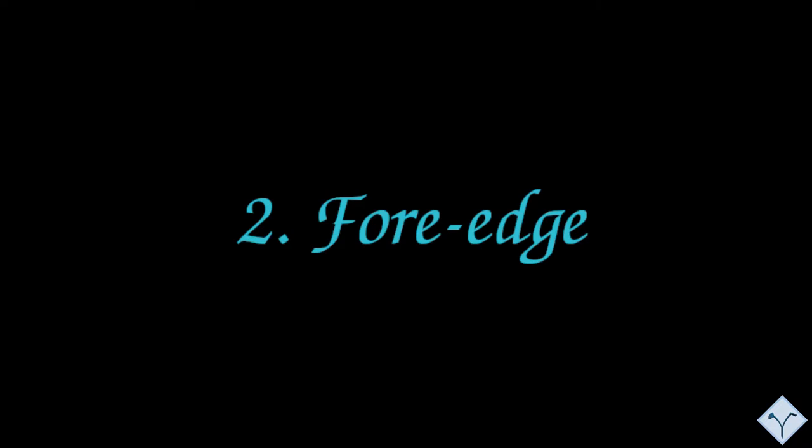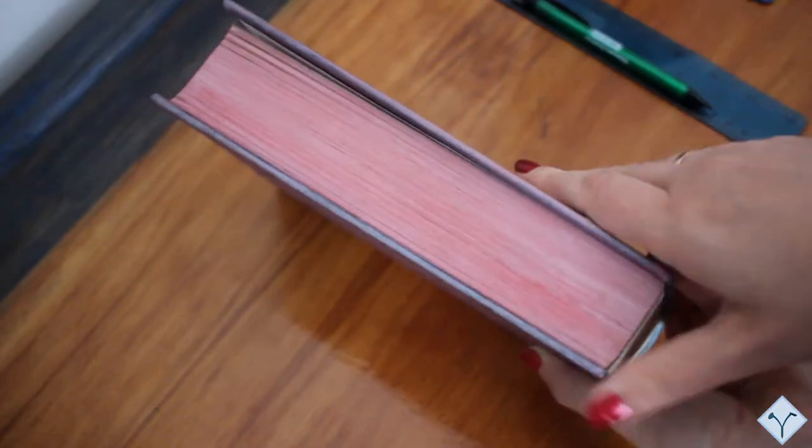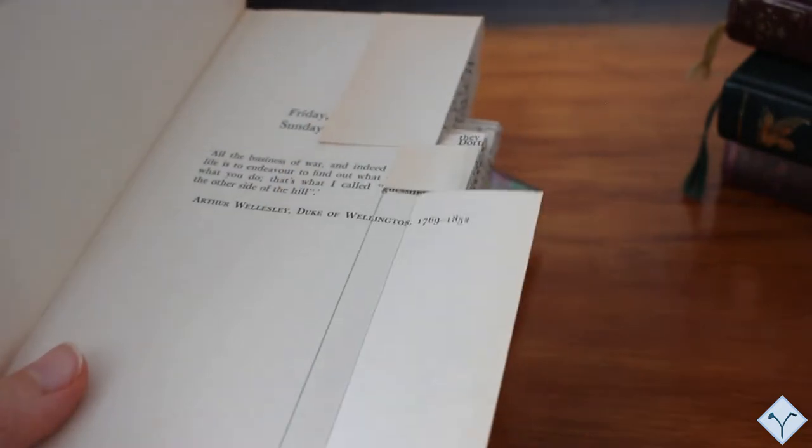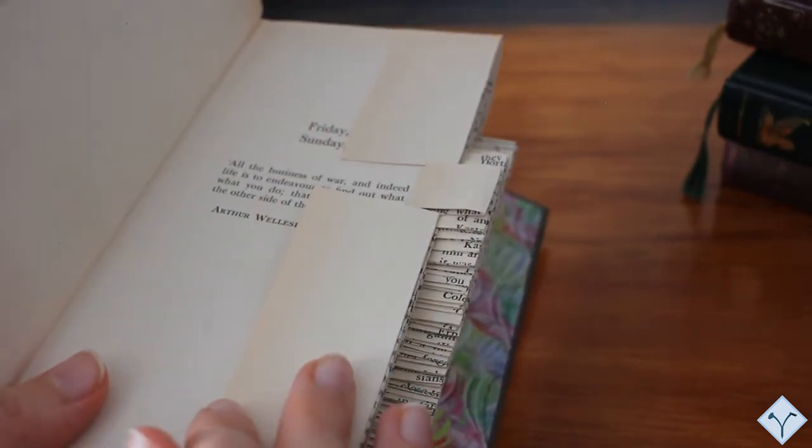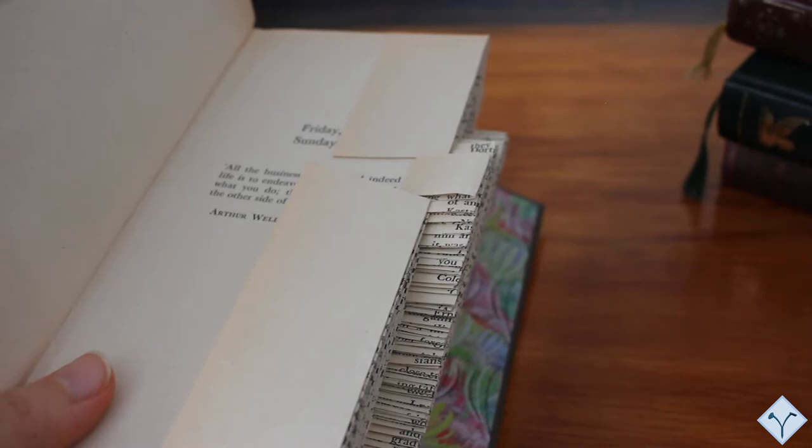Ideally, the shape of the fore-edge, that is the side opposite to the spine, should be flat no matter which method you use. However, for methods 1 and 2 where every leaf is folded, you won't see the fore-edge in the final result. Therefore, imperfections in the fore-edge can be masked.